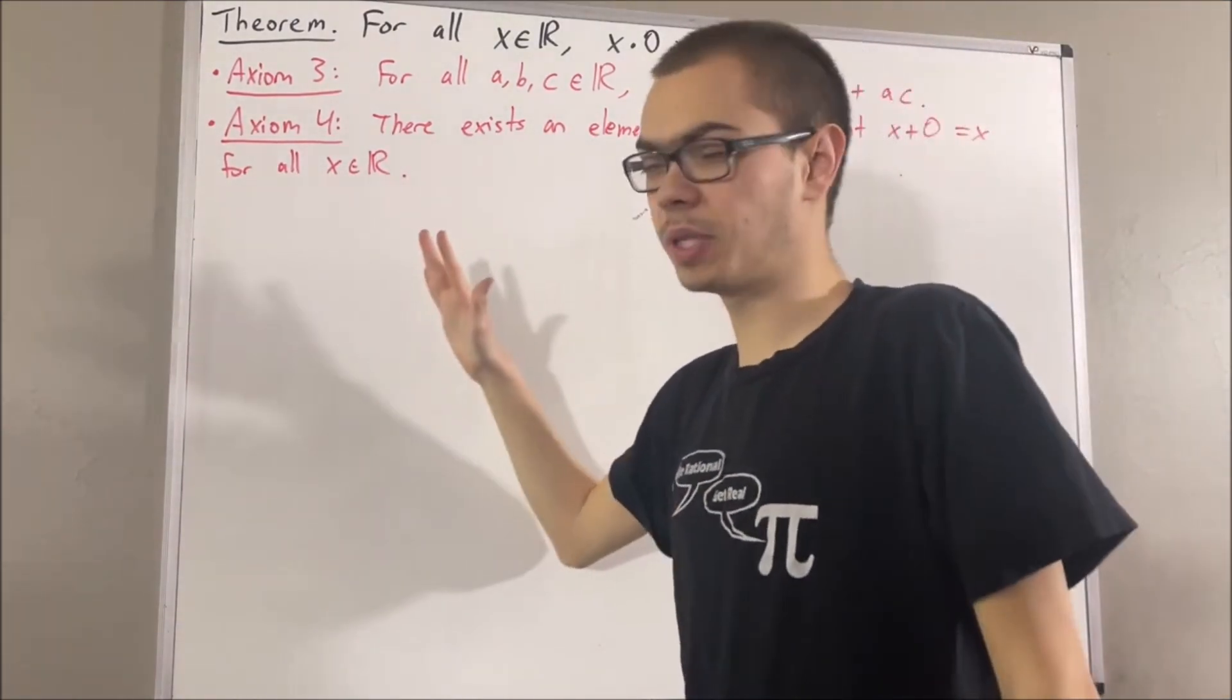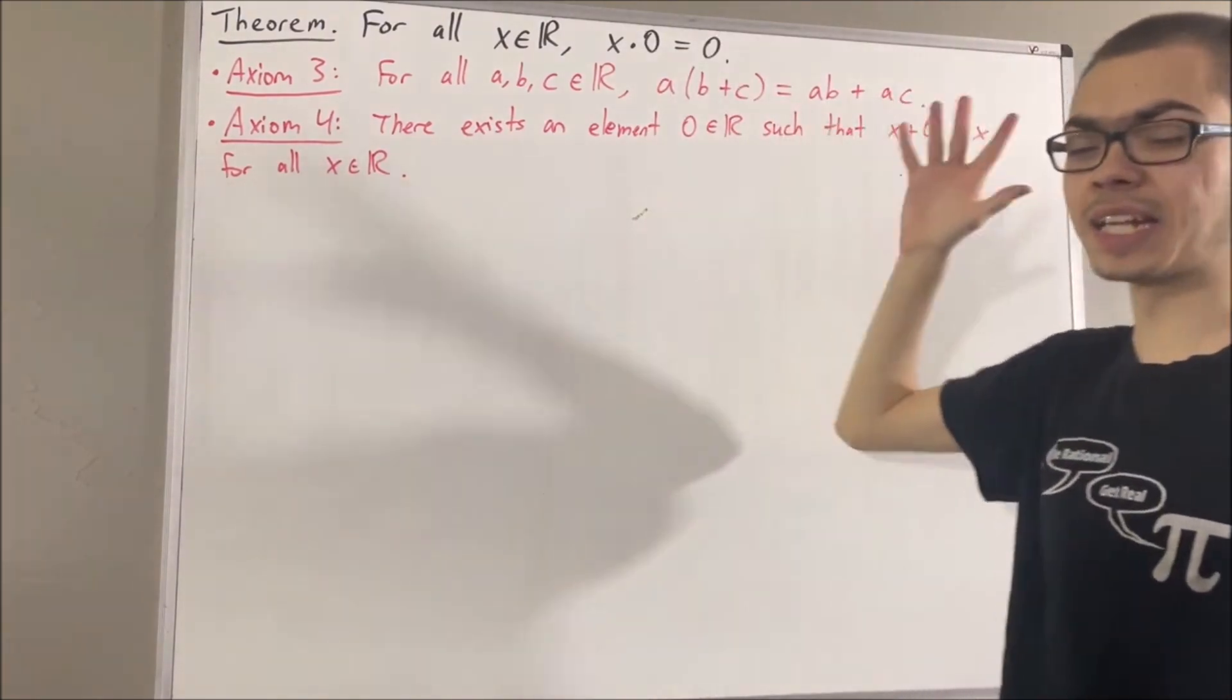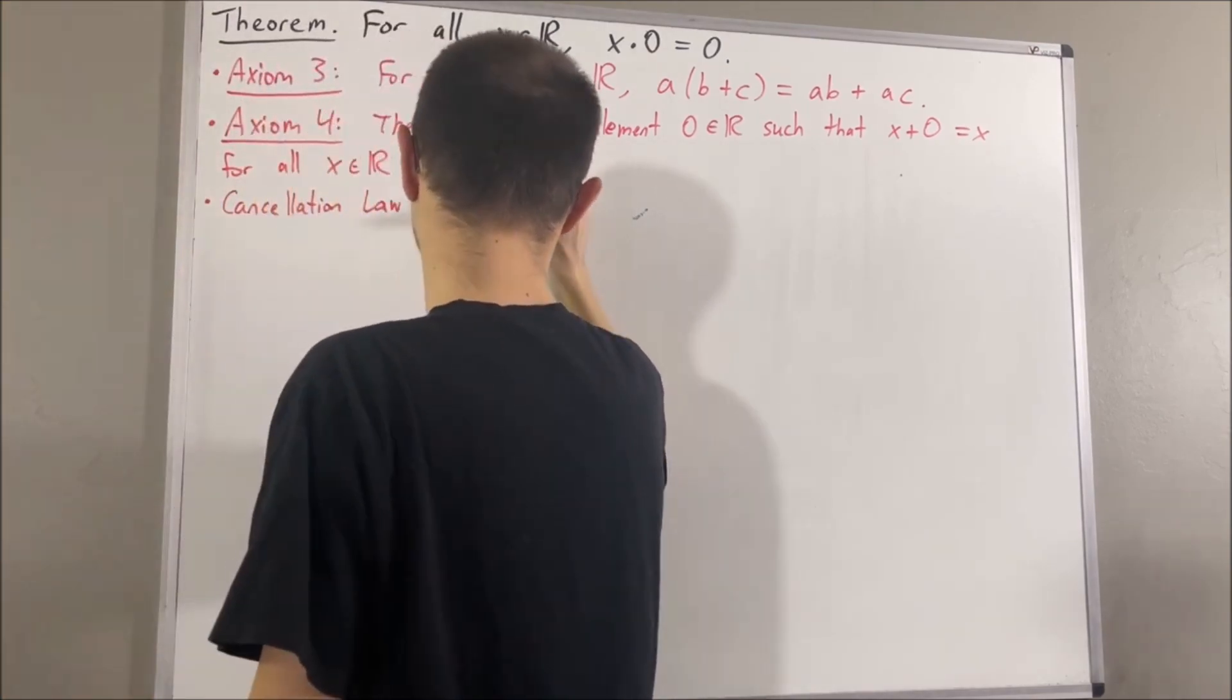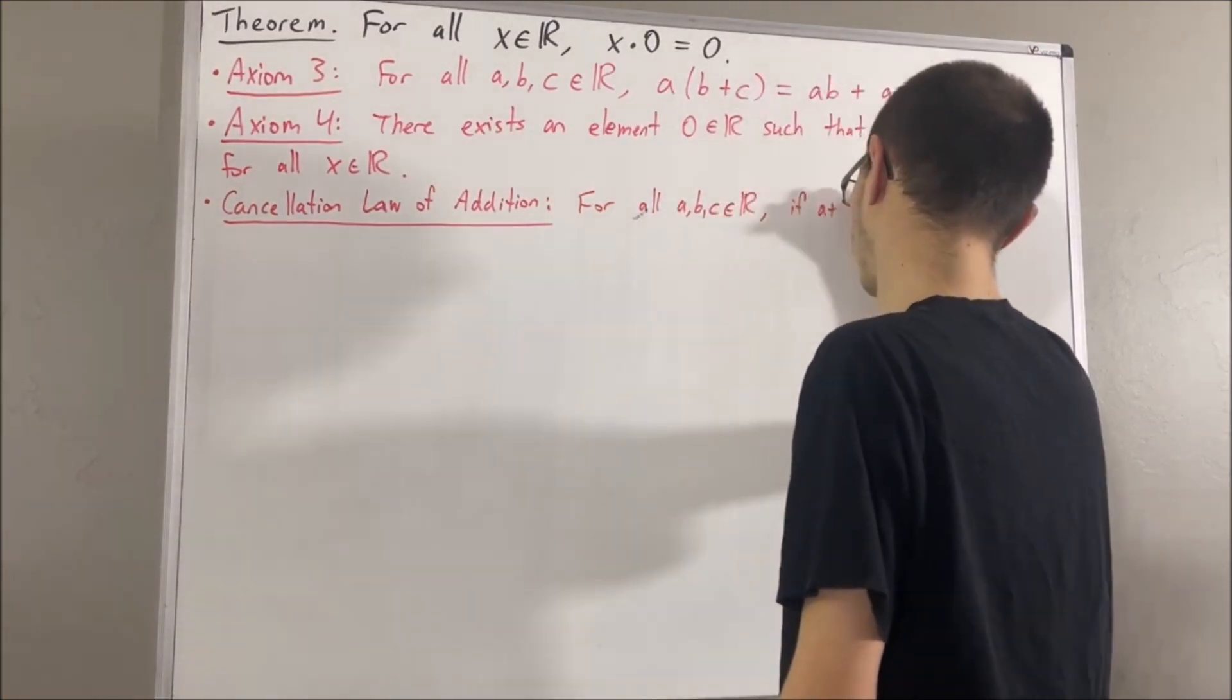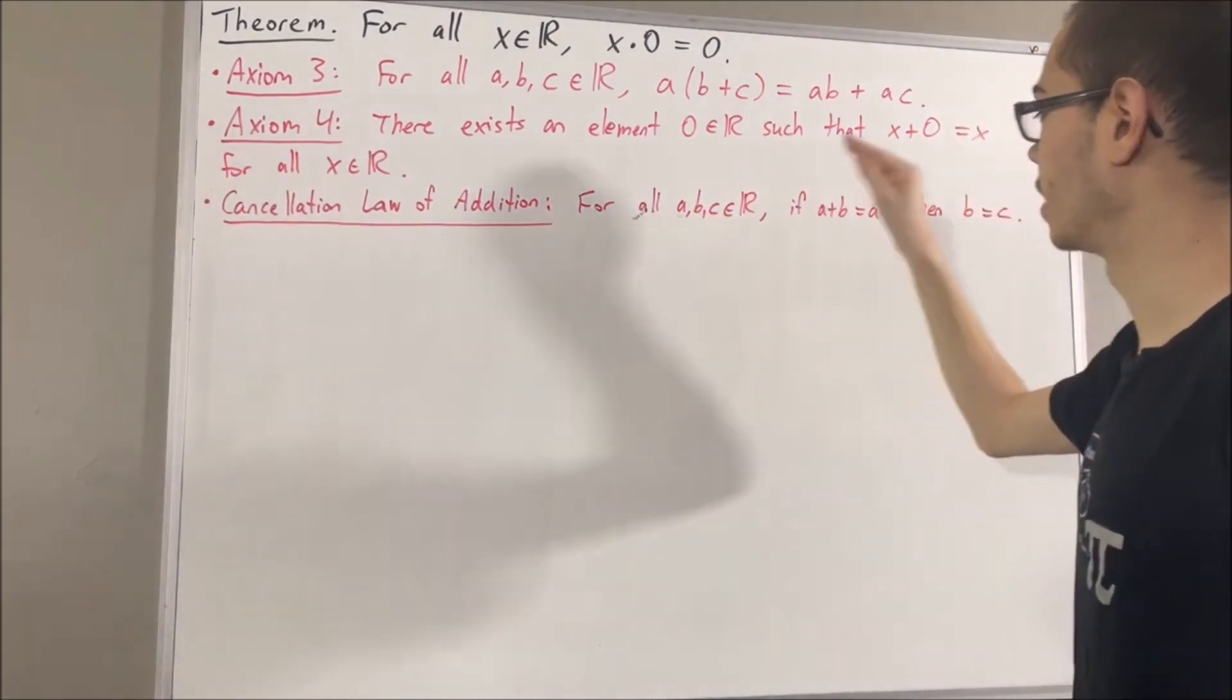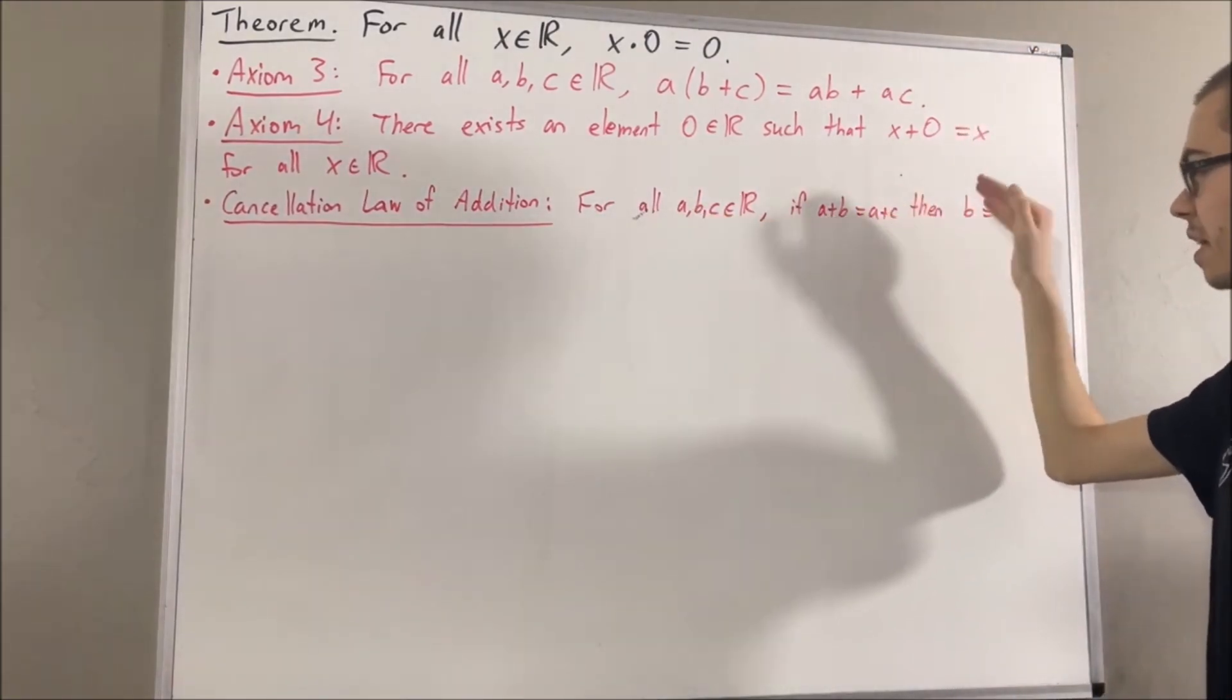And we're also going to be using a property that we proved about the real number system, and that property was the cancellation law of addition. We have proved, for all real numbers a, b, and c, if a plus b equals a plus c, then b is equal to c.